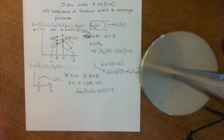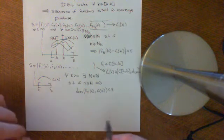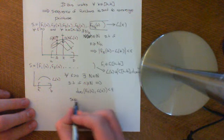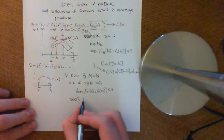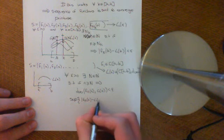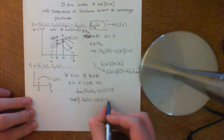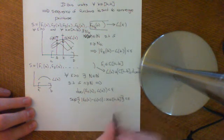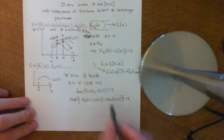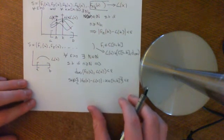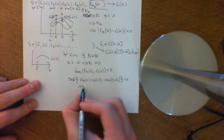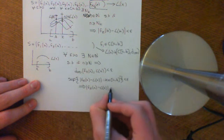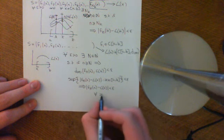We can replace D-infinity with what it actually is: the supremum of the set {|F_N(x) - L(x)| : x is an element of the interval A,B} is going to be less than epsilon. And if the supremum of this set is less than epsilon, then that implies that all the elements of this set are less than epsilon. Therefore, this implies that |F_N(x) - L(x)| is less than epsilon for all x in the interval A,B.